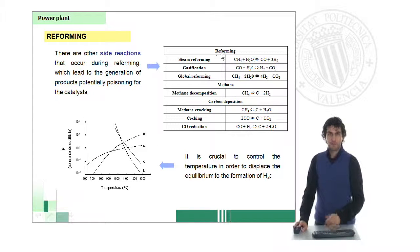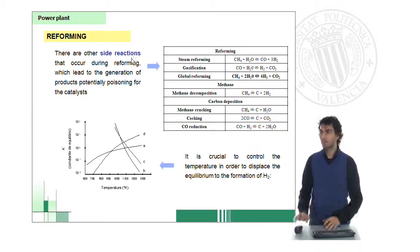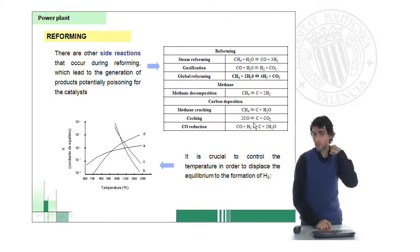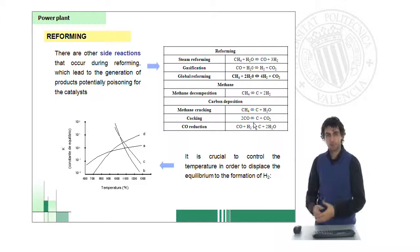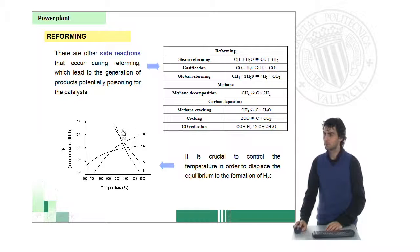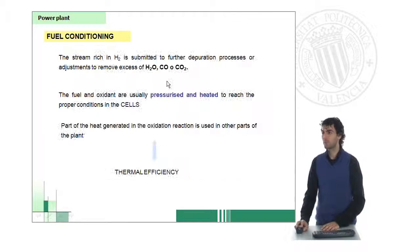Apart from the reforming, there are other side reactions which can affect negatively the way that reforming occurs, which can be the formation of methane or formation of some carbon particles which can again poison our electrolytes or electrodes. So we need to take into account the different reactions and the temperature in order to select the proper conditions for carrying out this reforming in the fuel cell.